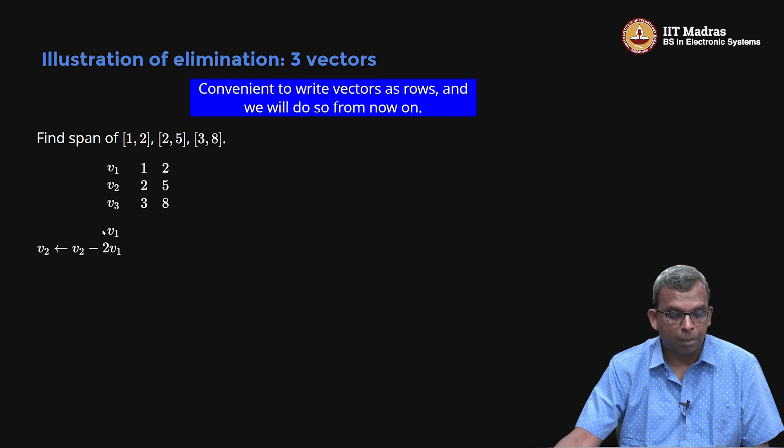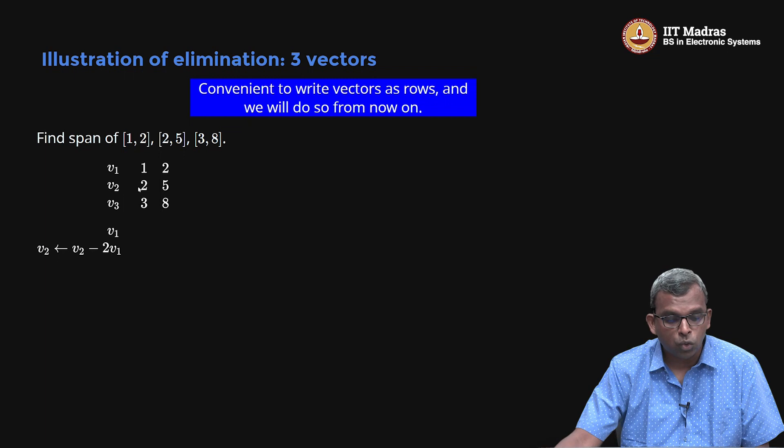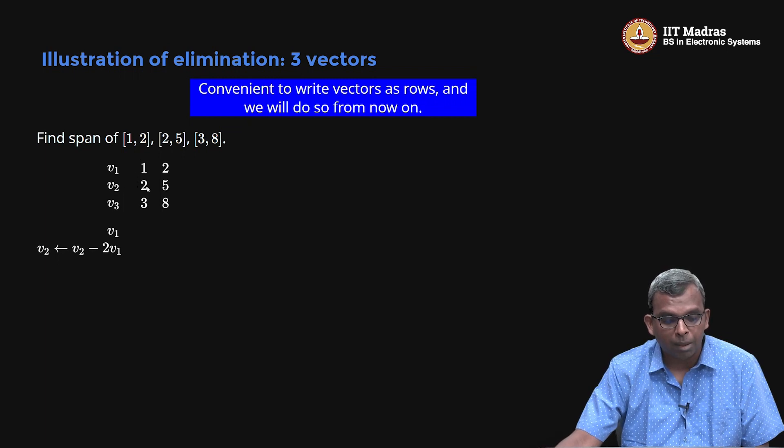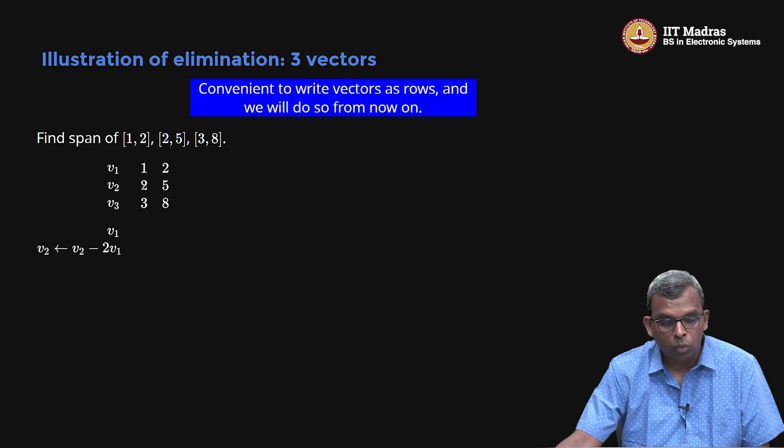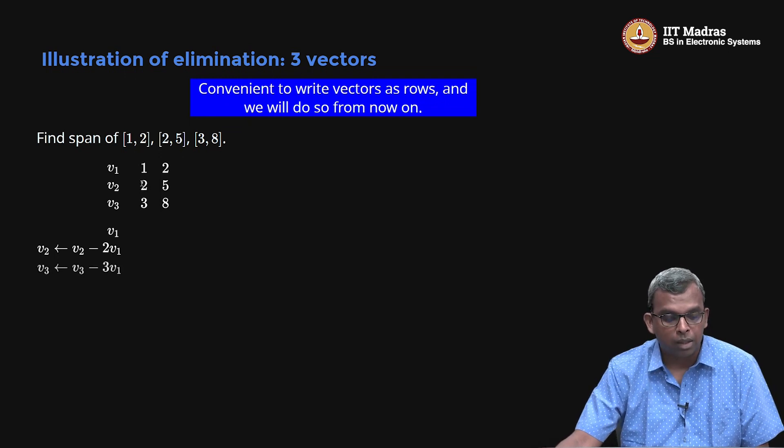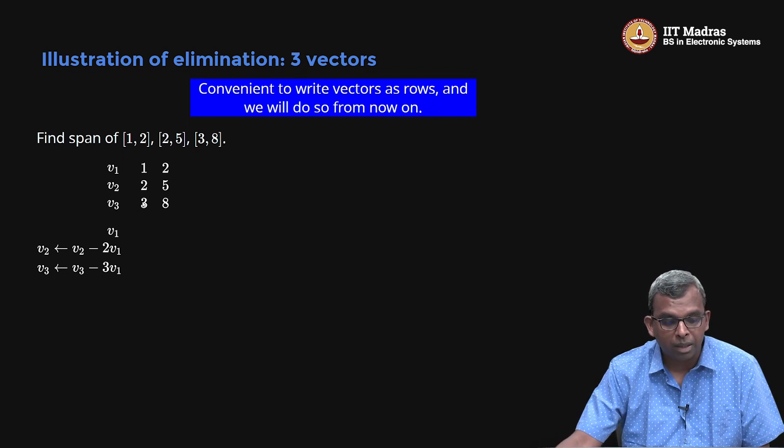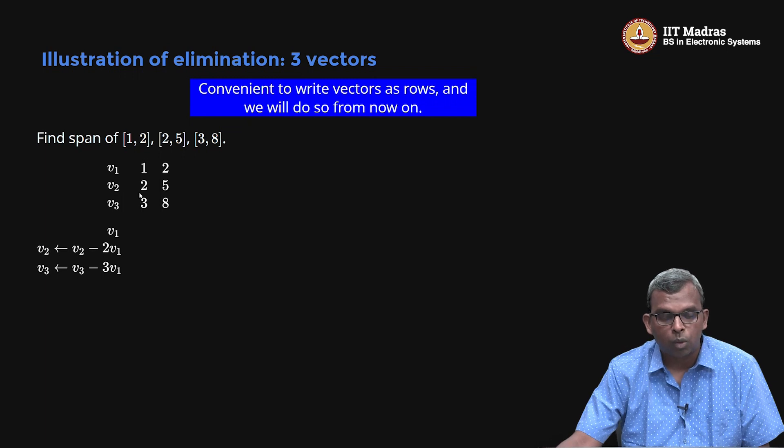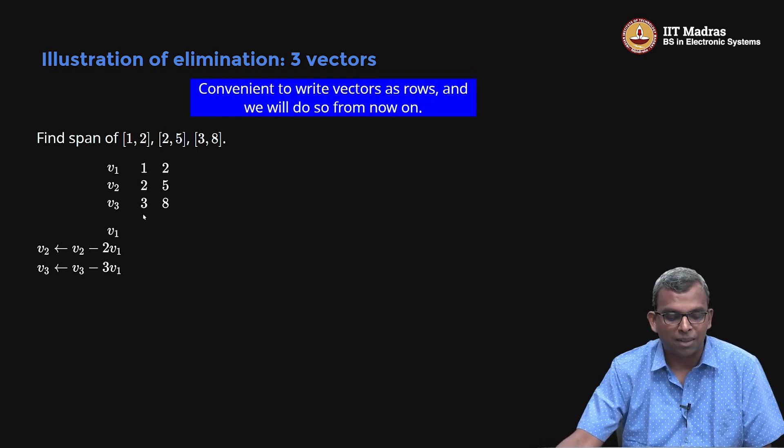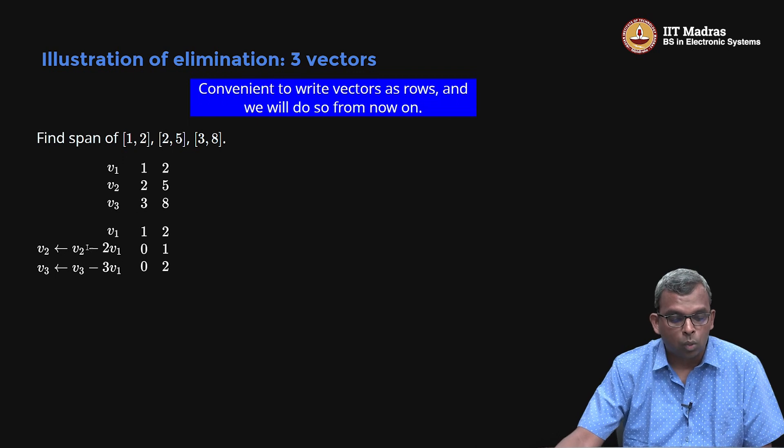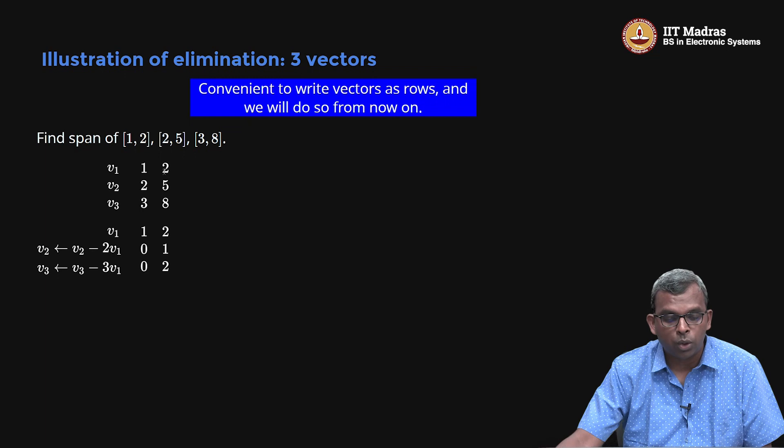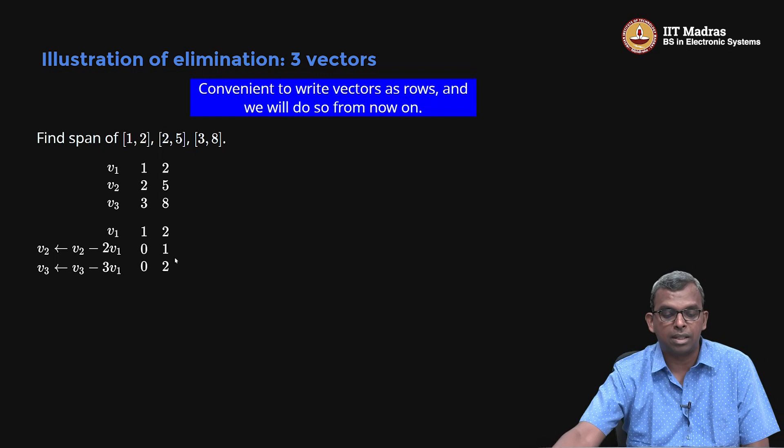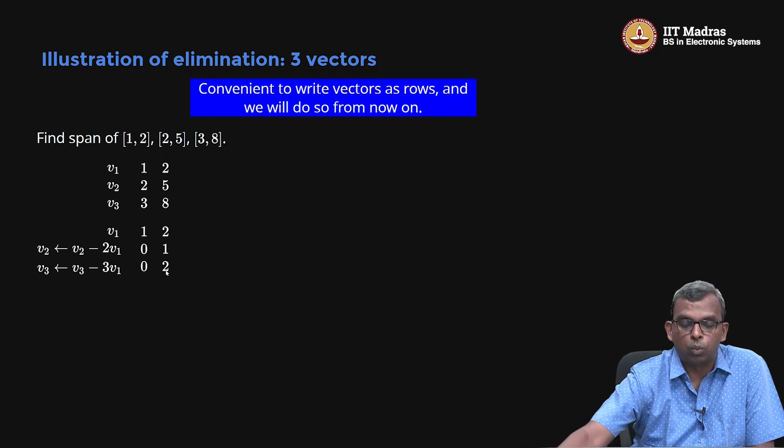Let us do that. v1 I am going to keep as such. I am going to replace v2 with v2 minus 2v1. How did I come up with this v2 minus 2v1? See, I want to make this 0. So I have to take 2 minus 2 times this, so this will become 0. Likewise, here v3 I want to make this 0. How do I make this 0? It should be v3 minus 3 times v1. So you see how that is going on. I have to bring in as many 0s as possible. That is the philosophy of elimination. Let us write that down. So it is 1, 2. What is v2 minus 2v1? This will go to 0. 5 minus 2 into 2 is 1. 5 minus 4 is 1. 3 minus 1 into 3 is 0. 8 minus 3 into 2 is 8 minus 6, which is 2.